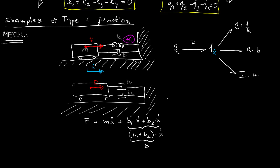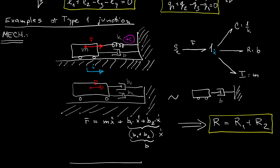From which we can draw a general conclusion that for type 1 junction resistances add. That is R is equal to R1 plus R2. Now how about the same situation but now with two springs.